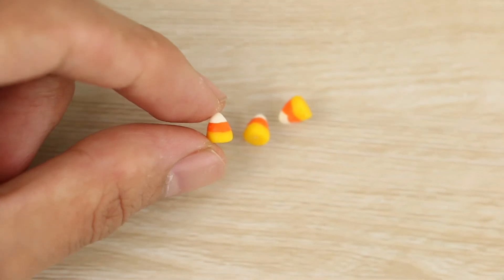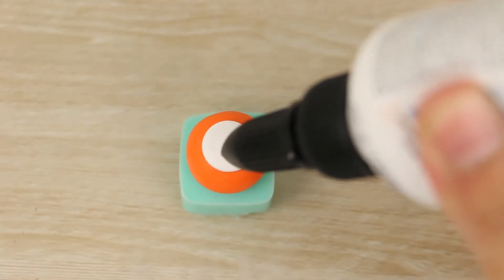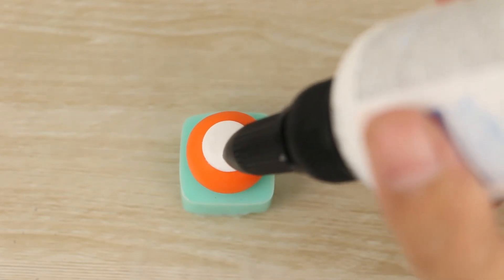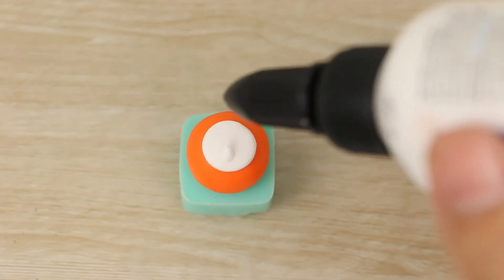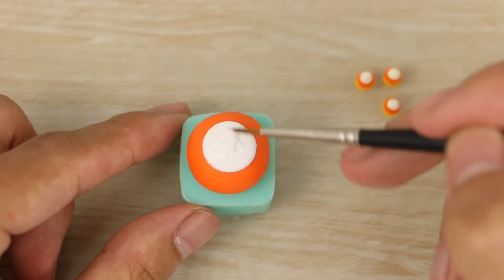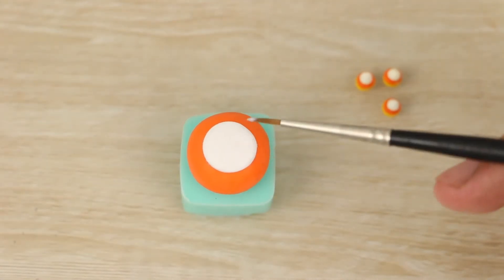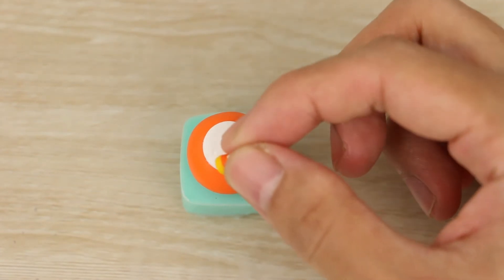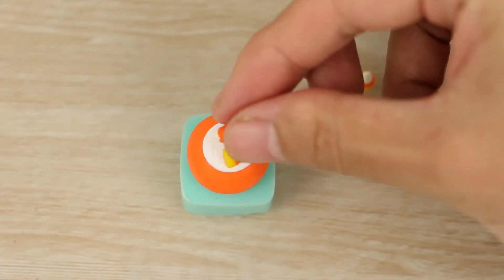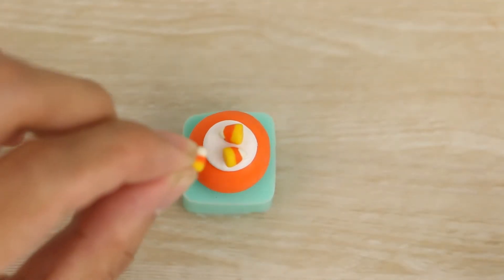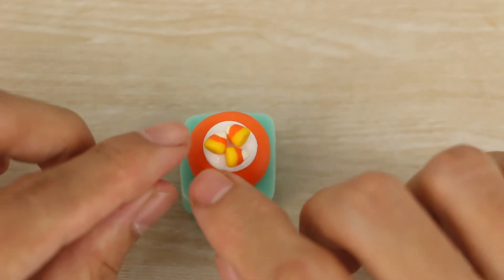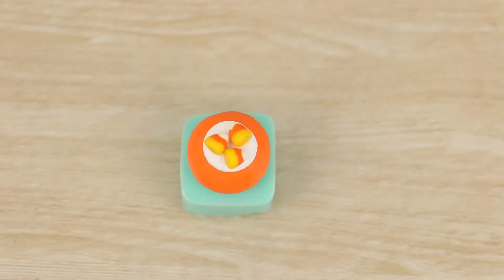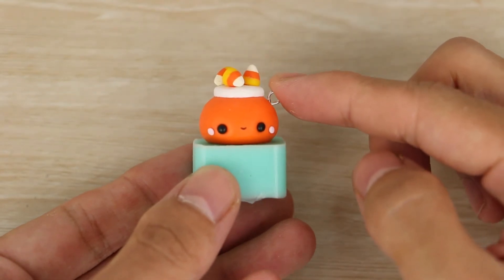I've then made some teeny tiny candy corn pieces to add onto the top and I have a full tutorial on how to make it on my channel which I'll leave in the description box below. So now to stick these on I'm brushing on some liquid clay so it's sort of like a glue, and I'm just brushing that onto the white icing and adding the little candy corns on the top. Then I've added the face and now in goes an eye pin to turn it into a charm.